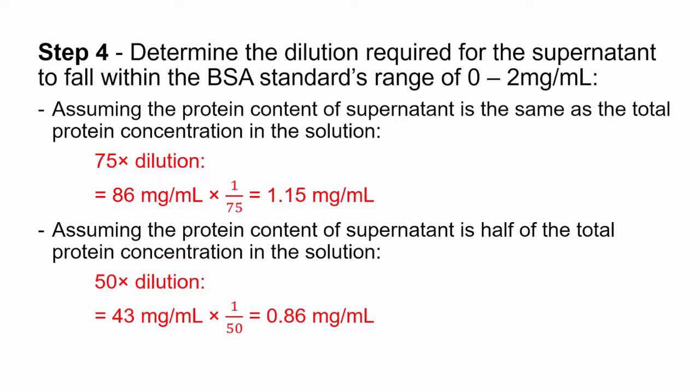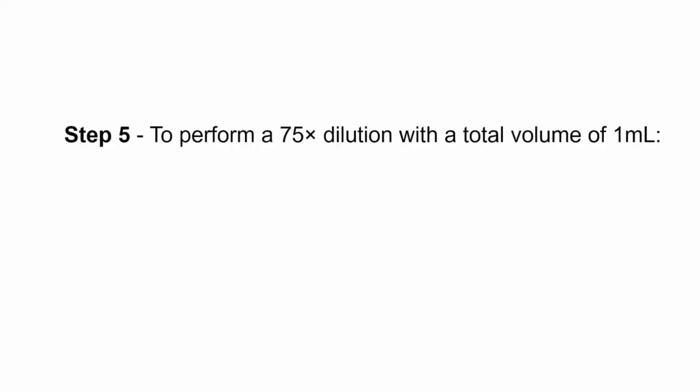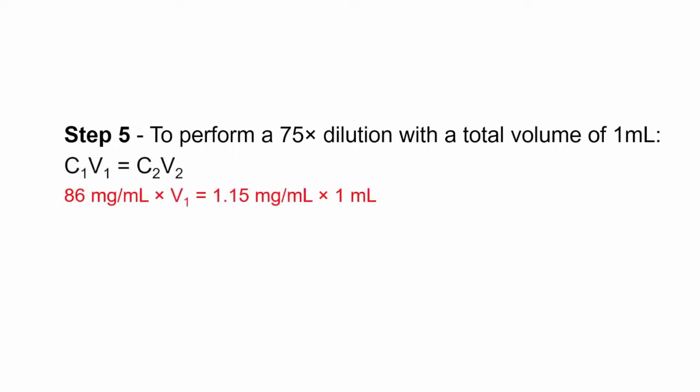You should always determine the concentration of the dilution you will use based on your specific cases. To perform a 75 times dilution with a total volume of 1 milliliter, 20 microliters of supernatant can be added to 980 microliters of DD water.